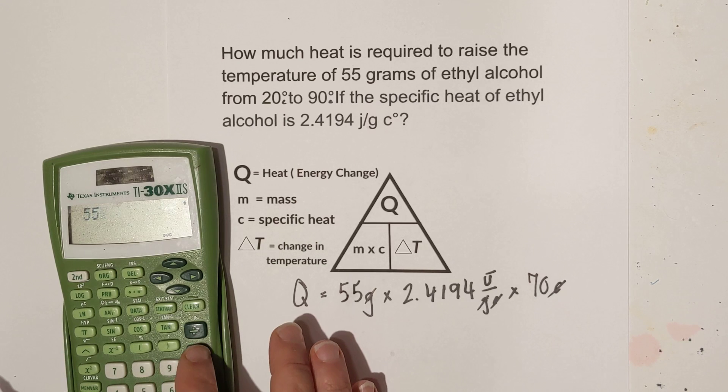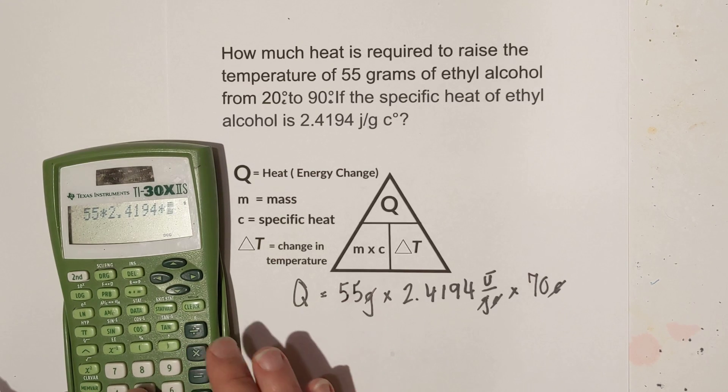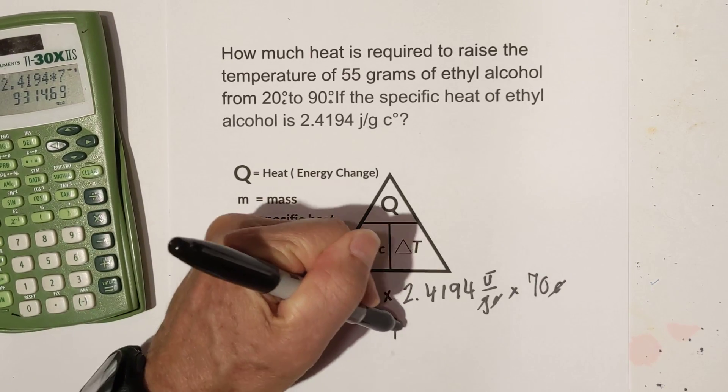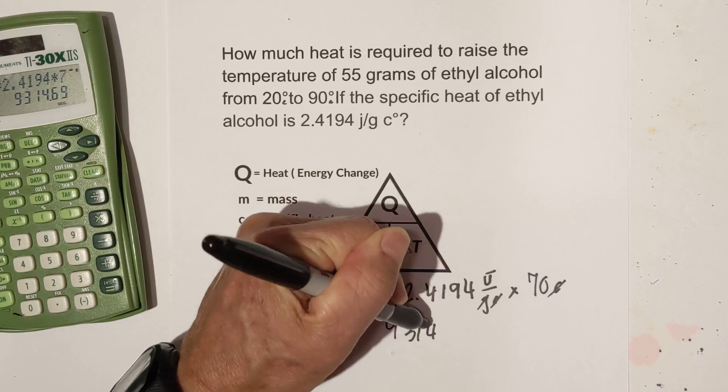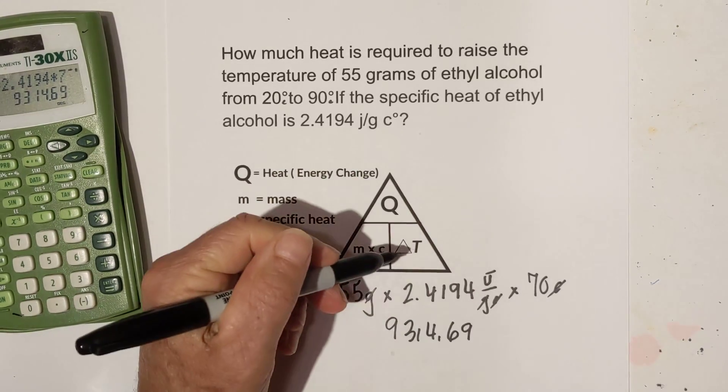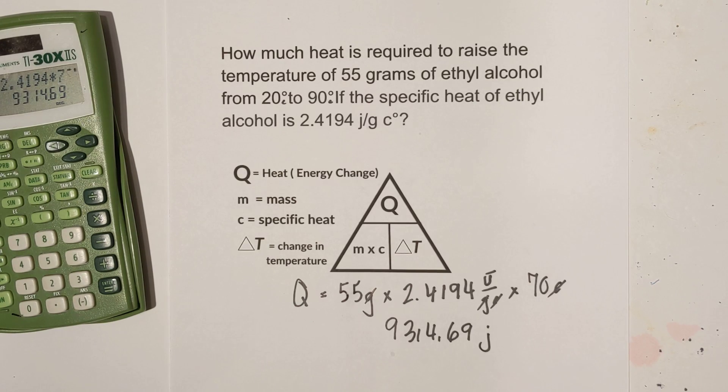We're going to go 55 times 2.4194 times 70 and that looks like we get 9314.69. And it is in joules, don't forget your unit of measure.